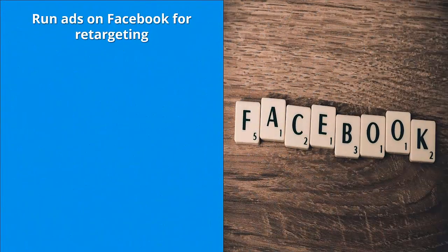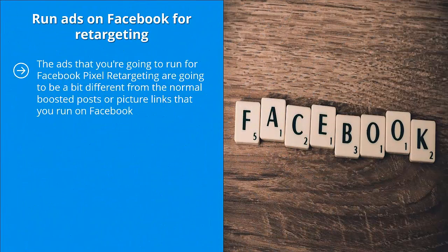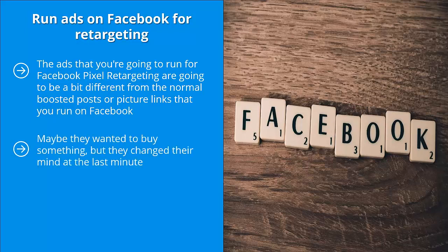Step two: run ads on Facebook for retargeting. The ads you're going to run for Facebook pixel retargeting are going to be a bit different from normal boosted posts or picture links that you run on Facebook. Instead, these are going to try to achieve two things. You can remind people about what they did — maybe they wanted to buy something but changed their mind at the last minute, or they were about to enter their email address but didn't. Whatever the case, you're reminding them to come back to what they were doing before.